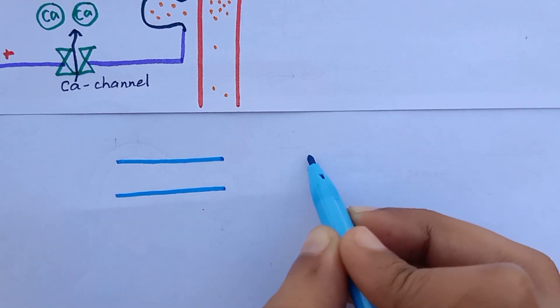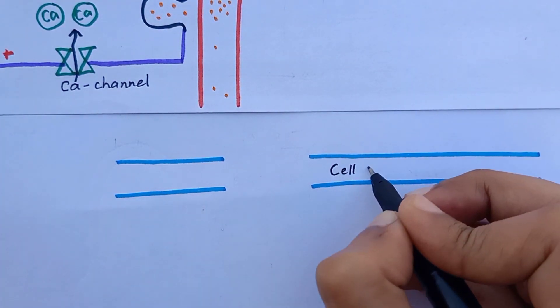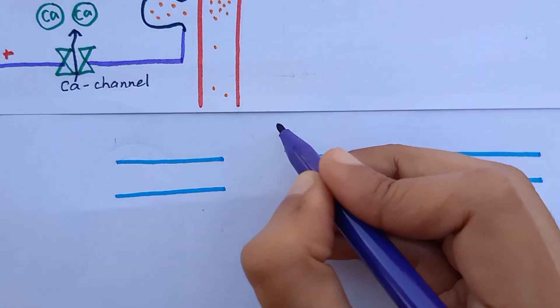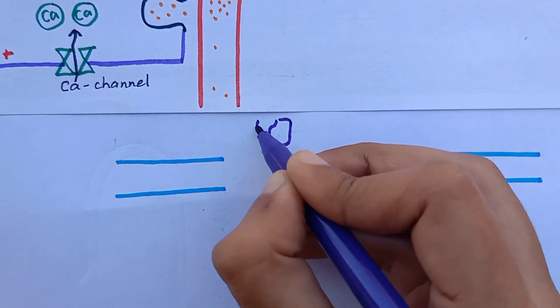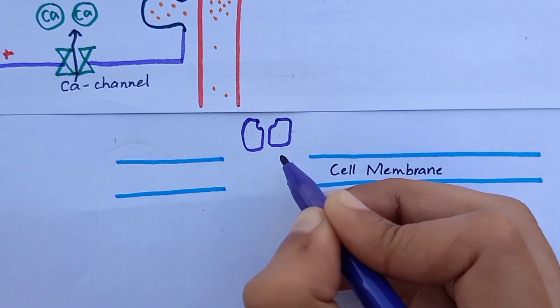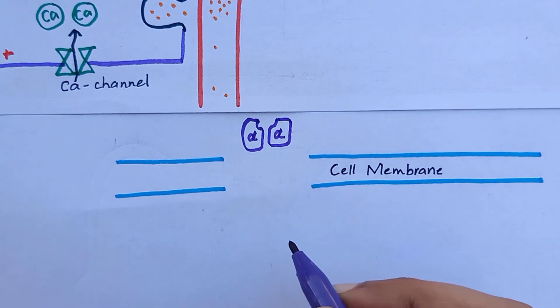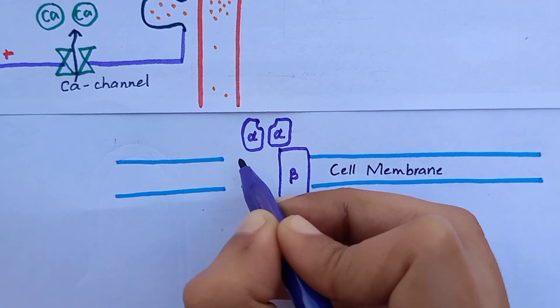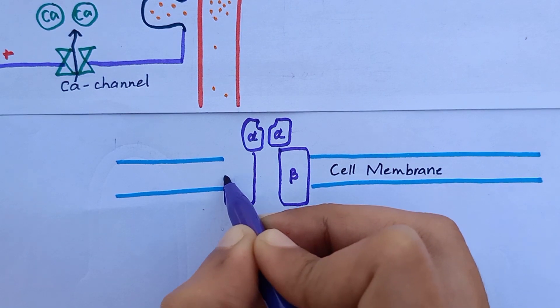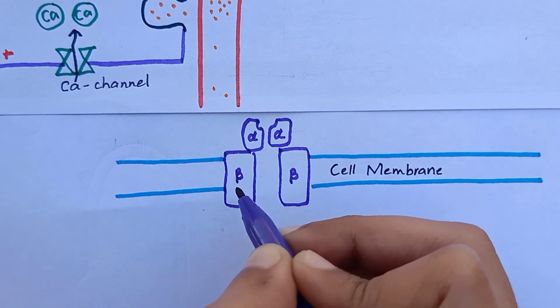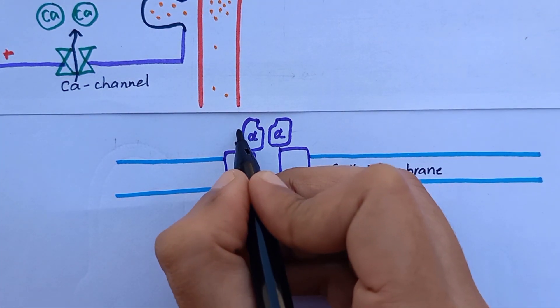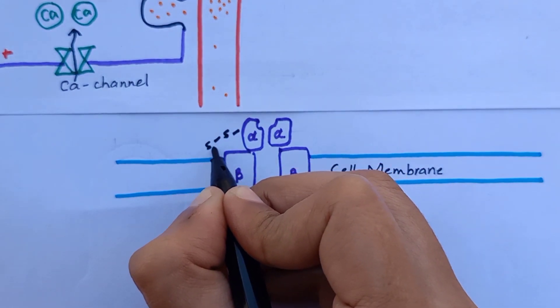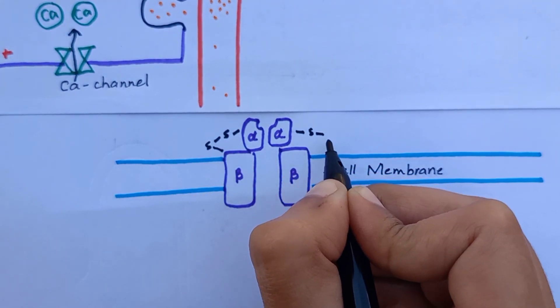To initiate its effect, insulin first binds and activates its membrane receptor on target cells. Insulin receptor is a combination of four subunits, two alpha and two beta subunits. Alpha subunits lie entirely outside the cell membrane, while beta subunit penetrates through this membrane, protruding into the cytoplasm. These subunits are held together by disulfide linkages.